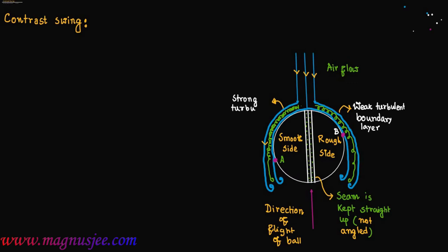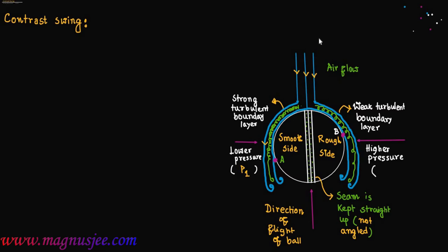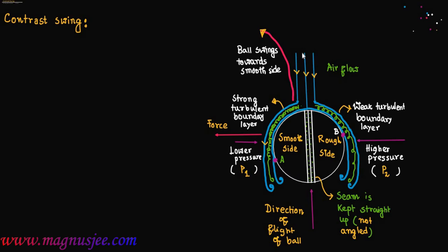There is a weak turbulent boundary layer on the rough side and a strong turbulent boundary layer touching the smooth side of the cricket ball. Lower pressure P1 acts on the smooth side and higher pressure acts on the rough side. The boundary layer separates from the cricket ball from point A later, and a lateral force acts towards the left, causing the ball to swing towards the offside — that is, towards the smooth side of the cricket ball. This is contrast swing, whereas for conventional outswing, the ball swings towards the offside with respect to the opposite end of the smooth side.